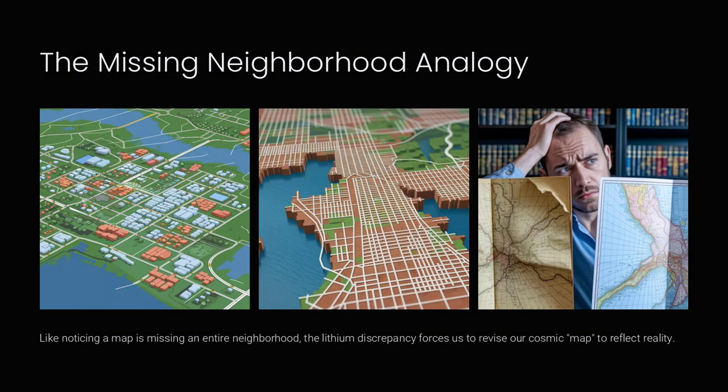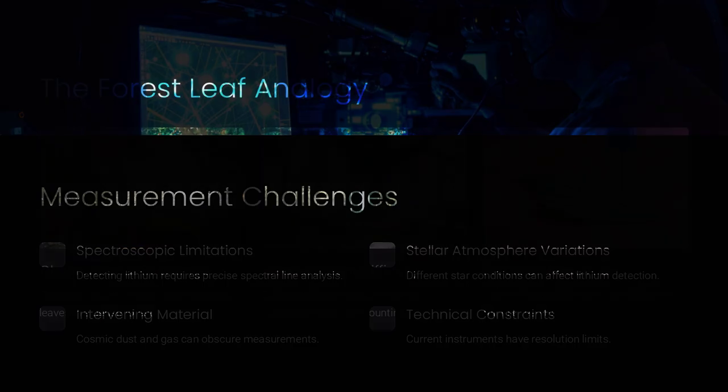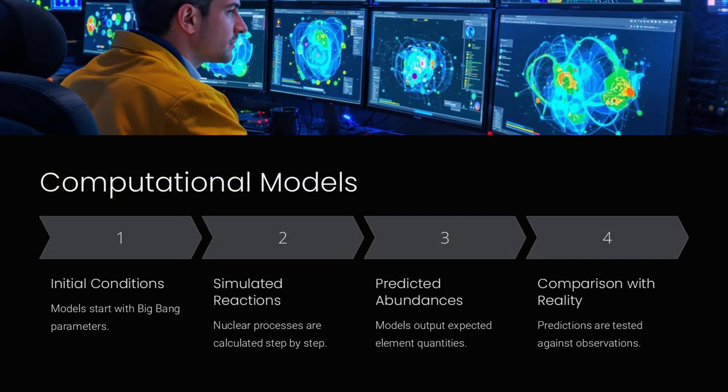According to our theoretical models, the early universe should have produced a certain amount of lithium, but when astronomers measure lithium in old stars and interstellar gas, they find much less than predicted. How can we explain this discrepancy?